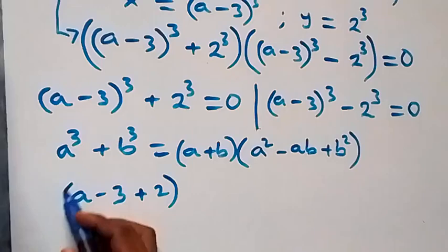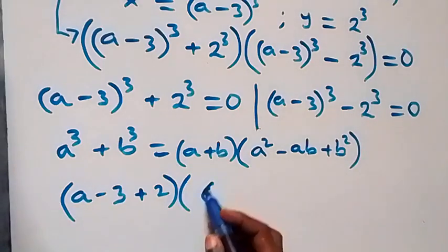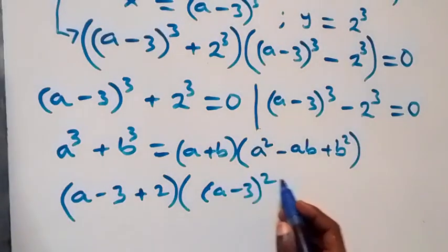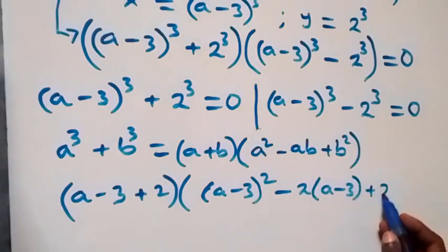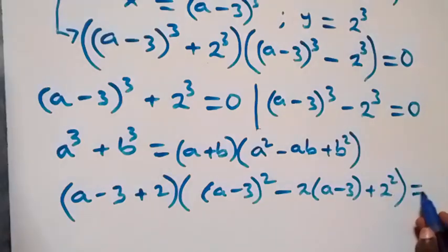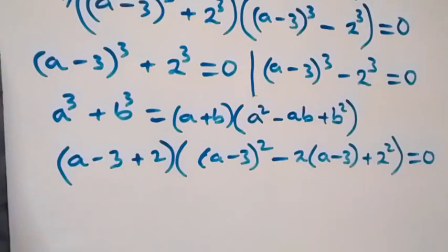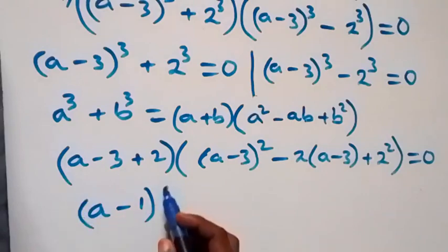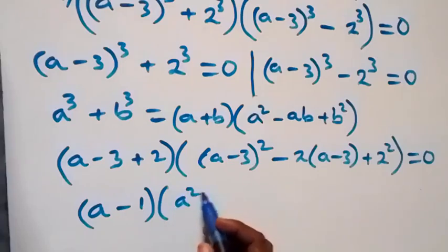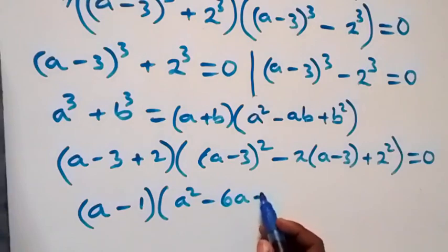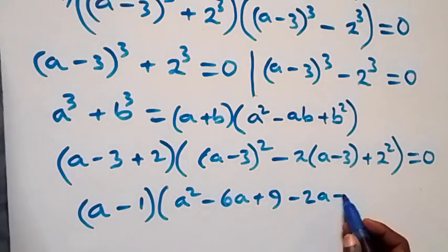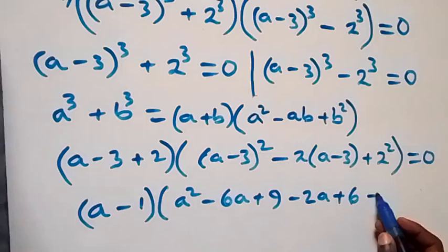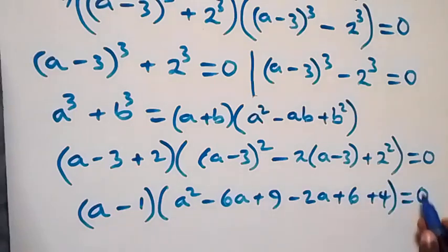So this equation can be written as (a minus 3 plus 2) times [(a minus 3) squared minus 2 times (a minus 3) plus 2 squared] equals to 0. From here, minus 3 plus 2 is minus 1, so we have (a minus 1) times [a squared minus 6a plus 9, minus (2a minus 6), plus 4] equals to 0.